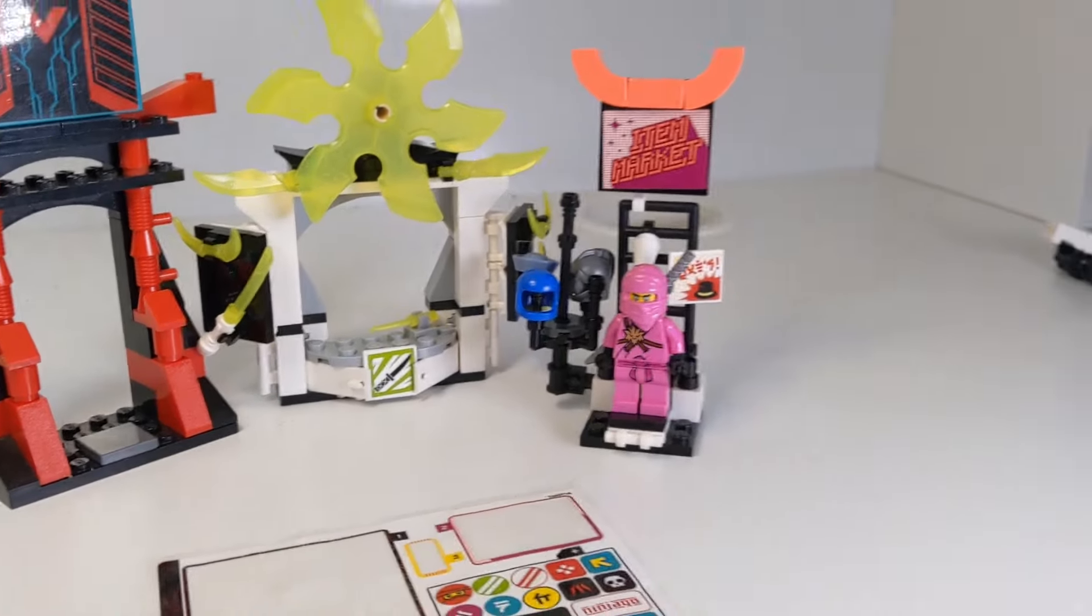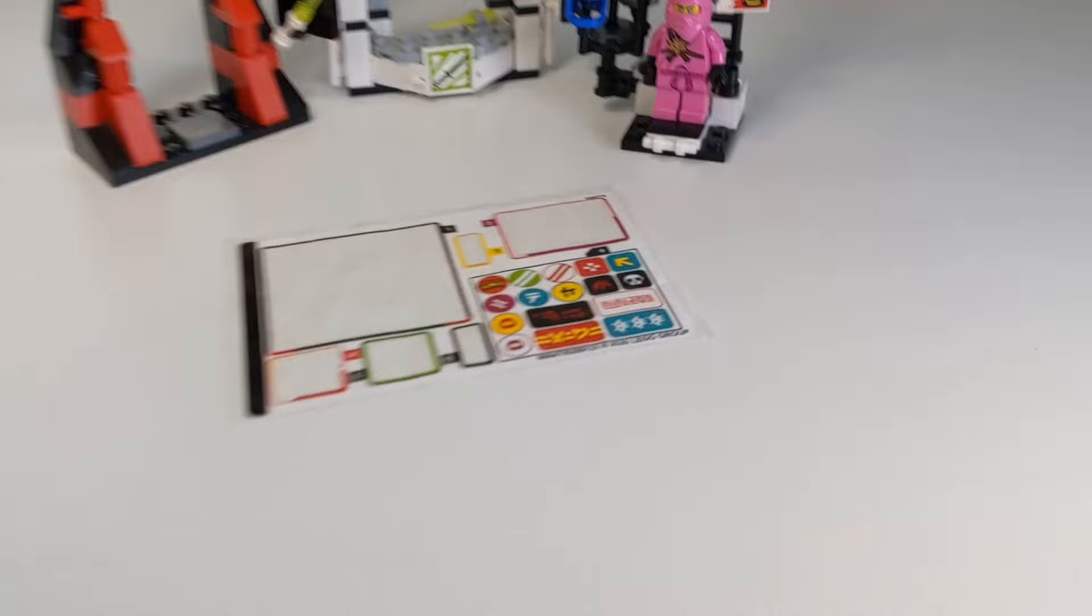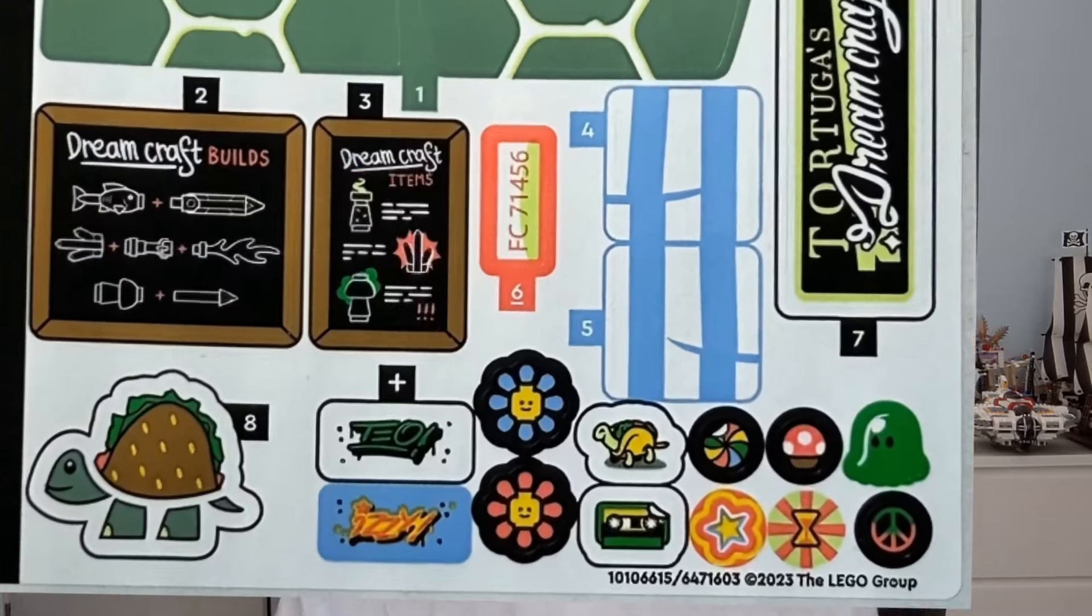For example, in the Gamers Market set from 2020, they include many stickers, but there's a small section on the sheet that's not used in the set. This is so that kids can choose where they want to put these stickers. In this Turtle Van set, there are 12 extra stickers which are shown with this little plus icon on the sticker sheet.